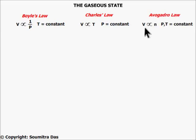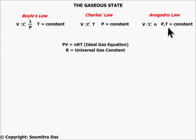Now according to Avogadro's law, the volume of the gas is proportional to the number of moles when both pressure and temperature are kept constant. Combining these three laws, we get the ideal gas equation, which is PV = nRT, where R is the universal gas constant.